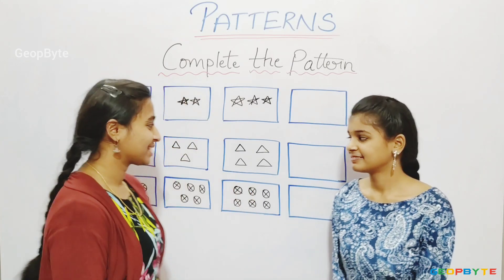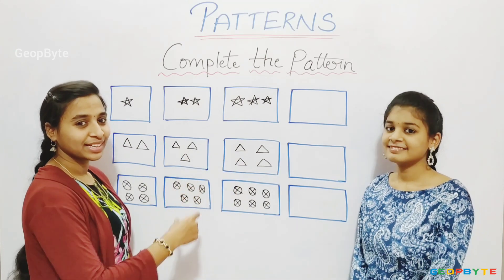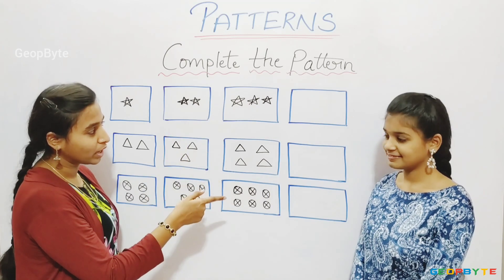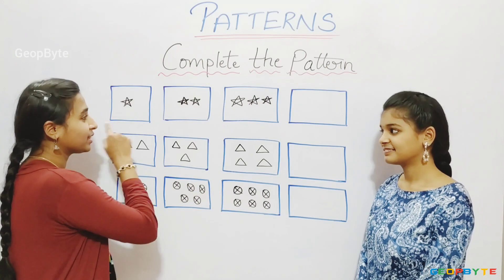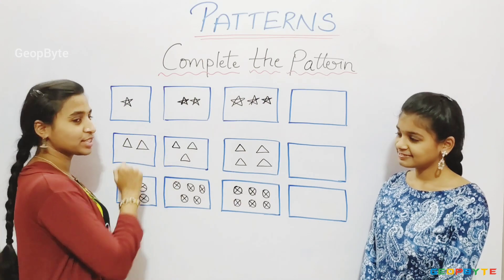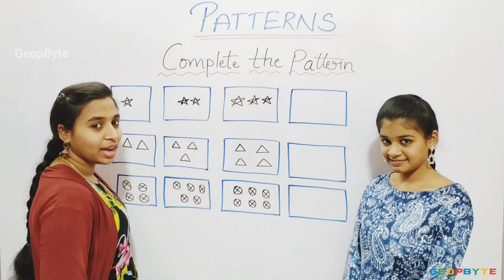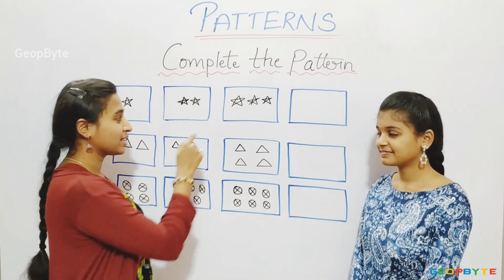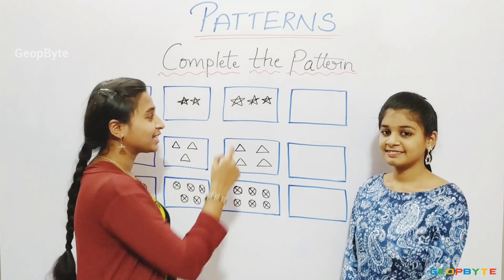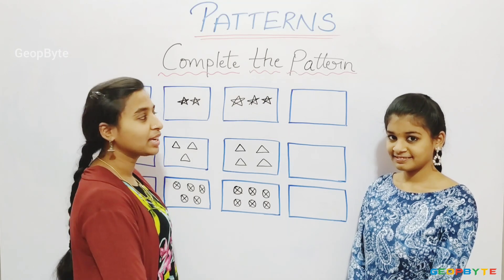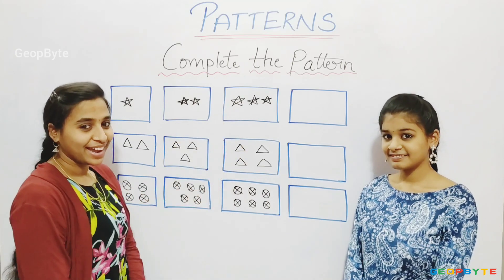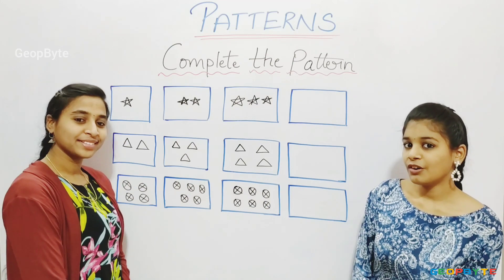See here — we have few boxes with objects. Let us go one by one. First, this sequence: there is 1 star in this box, 2 stars in this box, 3 stars in this box. How many stars will come in the next box? 1, 2, 3, and 4. Let us draw 4 stars.